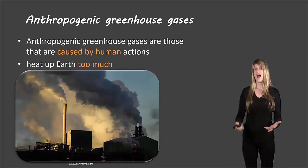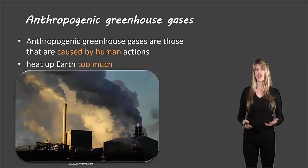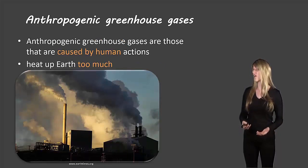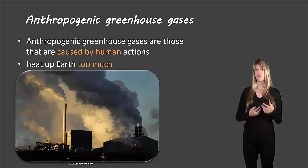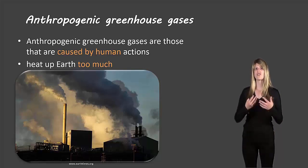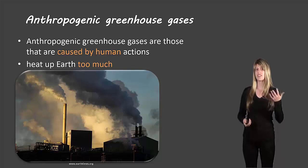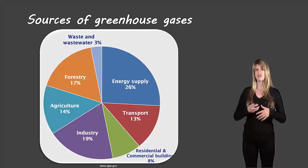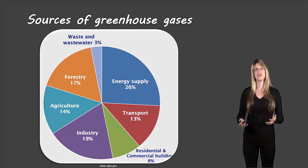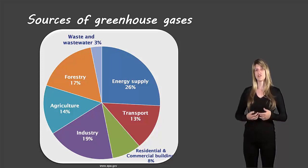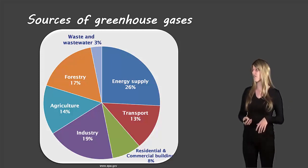So what about the bad greenhouse effect or the anthropogenic or human enhanced greenhouse effect? Well this is caused when humans have actions on earth that cause too much greenhouse effect and it causes the earth to heat up too much. And some of these can be caused by the same greenhouse gases that would naturally exist with the natural greenhouse effect, but the humans produce too many of these greenhouse gases so it causes this enhanced effect.